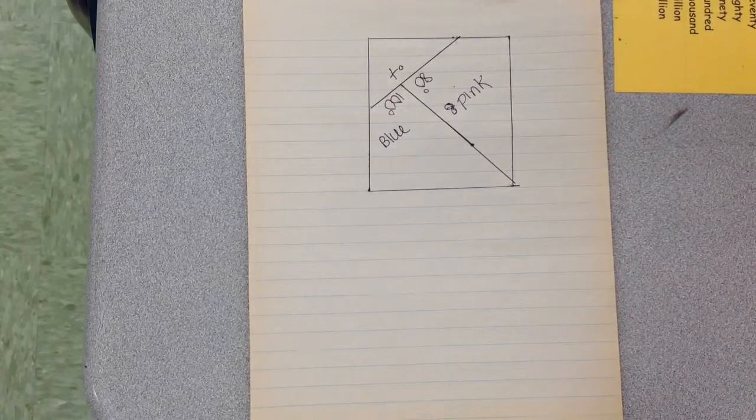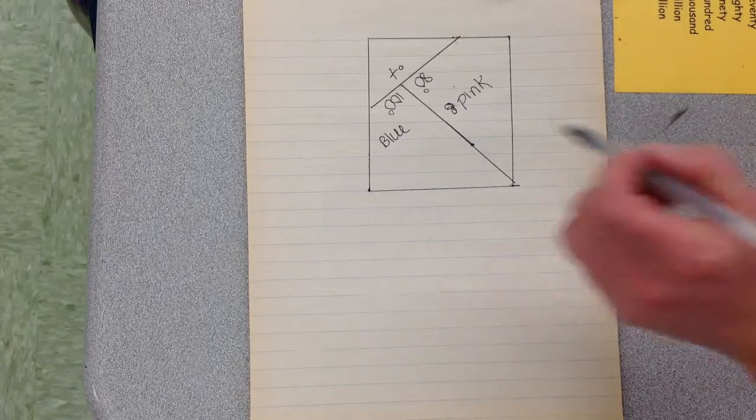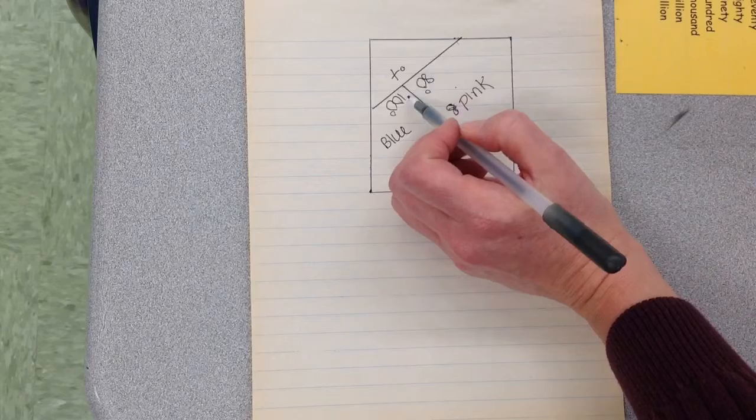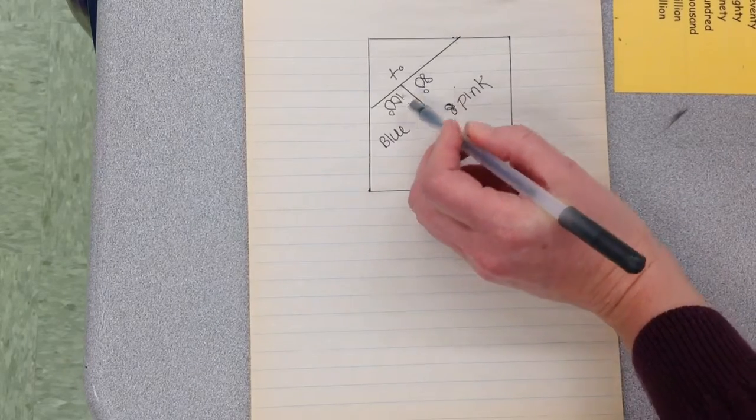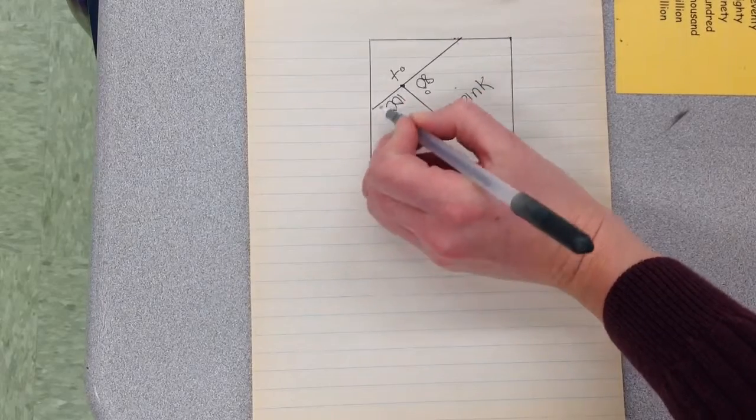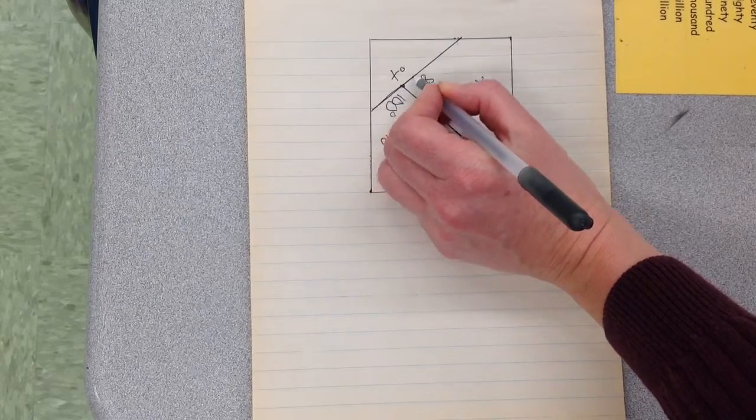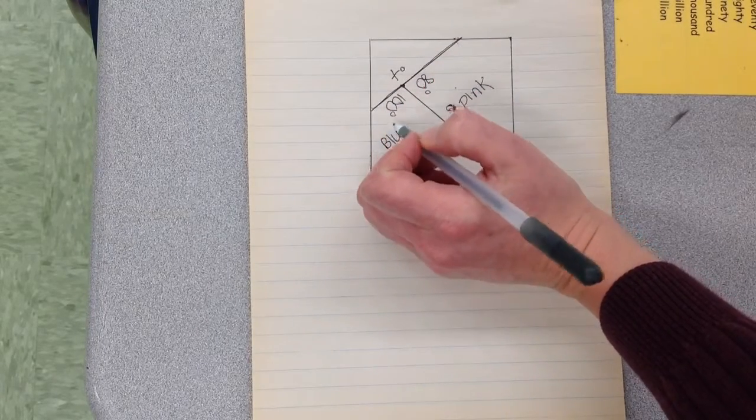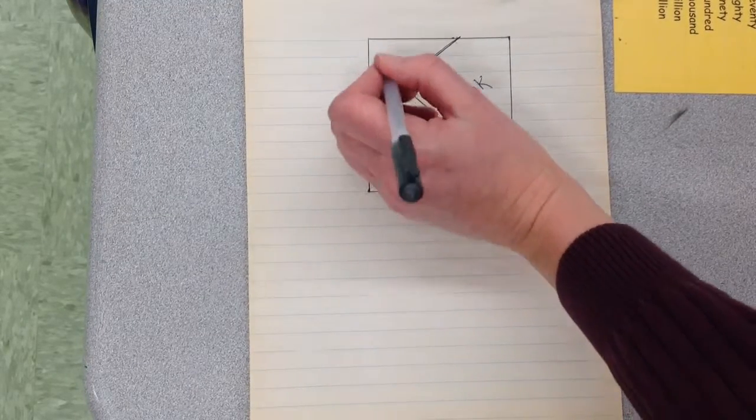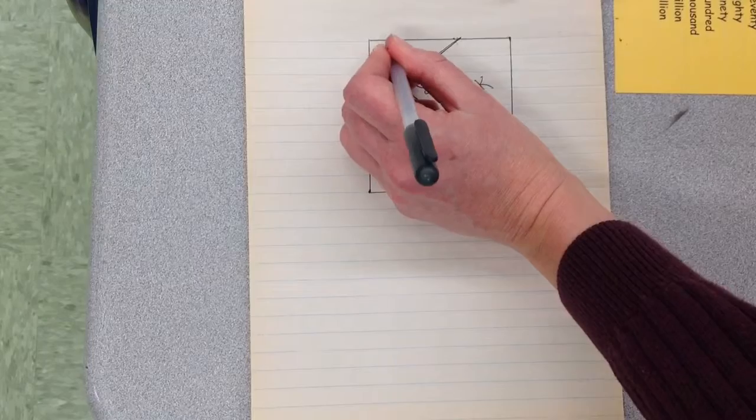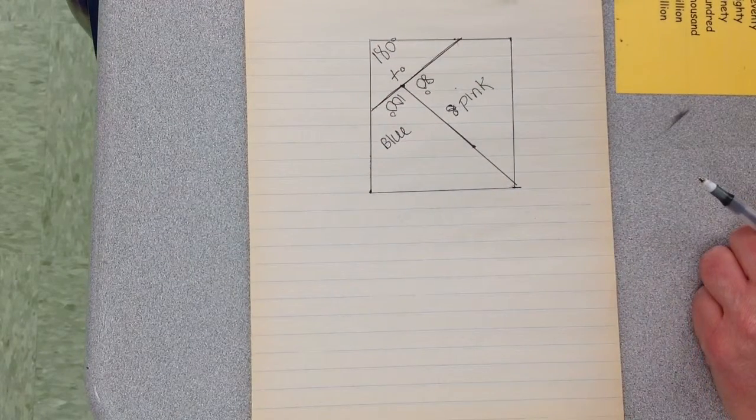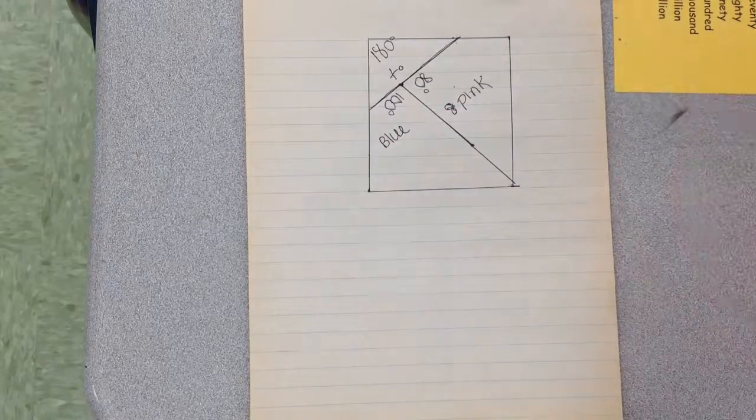So we need to know what angle measurement is determined by the green piece. Well if we look, this is 80 and this is 100. We know there's a common point and by looking at the drawing, x or the green is going to be 180. So x equals 180, because there's a common point.